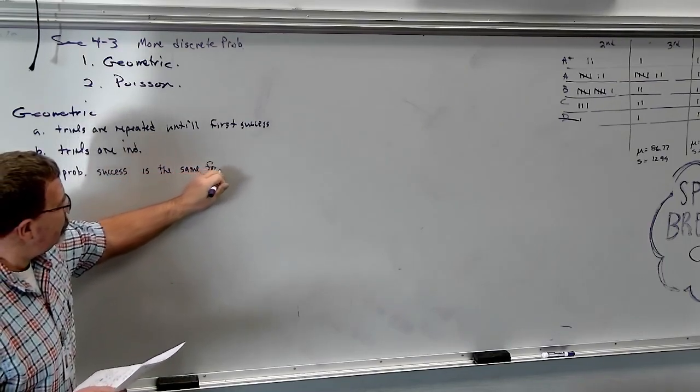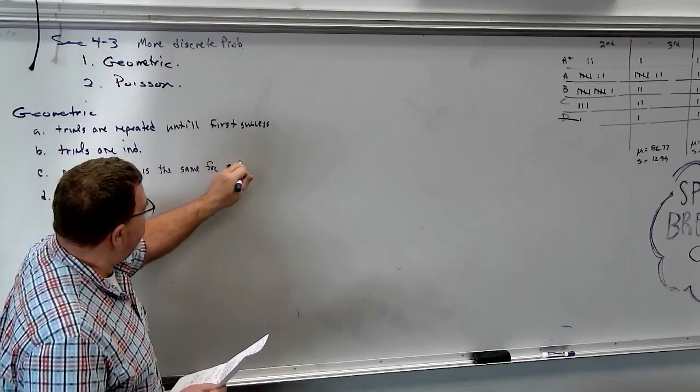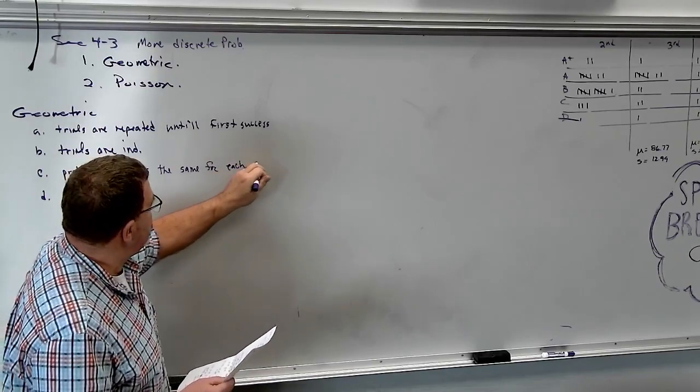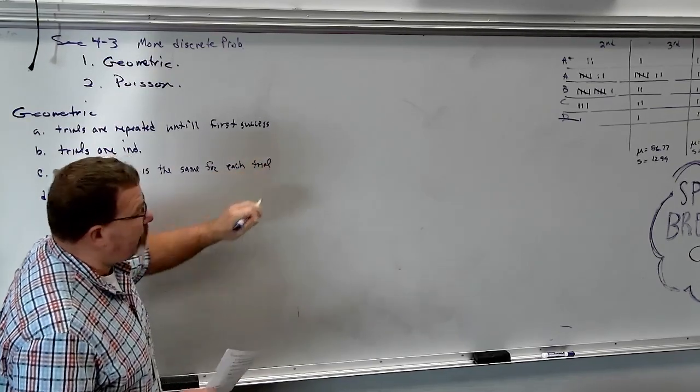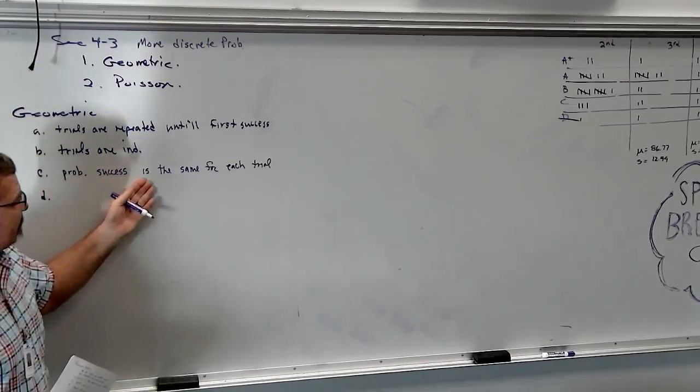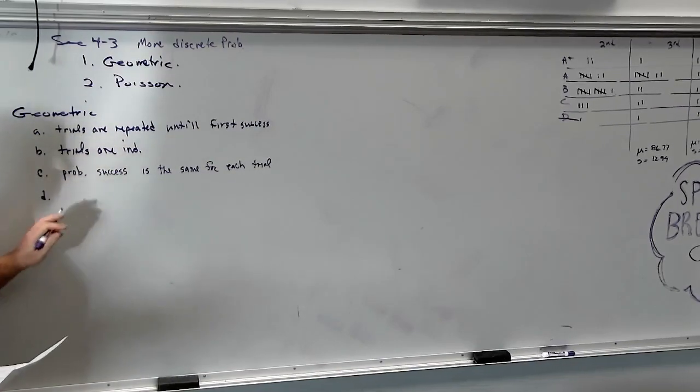Our probability of success is the same for each trial. If my free throw average is 90%, when I miss my first shot, I still have a 90% chance of making the next shot. Now, if you kind of think about it though, if I miss like my first four shots and I'm a 90% shooter, I would think my odds would be a little bit better that I'm going to eventually make one or I wouldn't be shooting 90%.